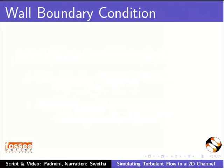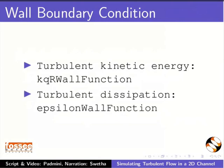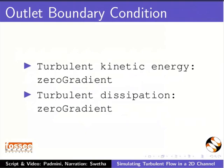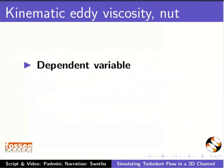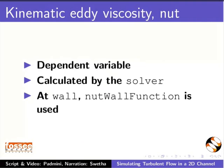Let us take a look at the wall boundary conditions. Turbulent kinetic energy is set to KqR wall function. Turbulent dissipation is set to Epsilon wall function. At the outlet, a zero gradient boundary condition is imposed for both parameters. Kinematic eddy viscosity is a dependent variable; its value is calculated by the solver. At the wall, the nut wall function is used. The additional reading material has more details on the boundary conditions — please refer to it.